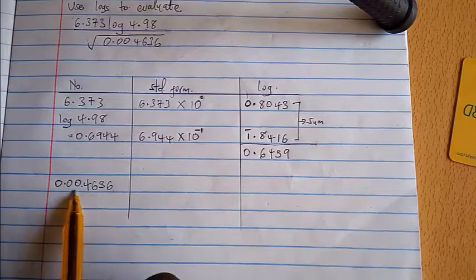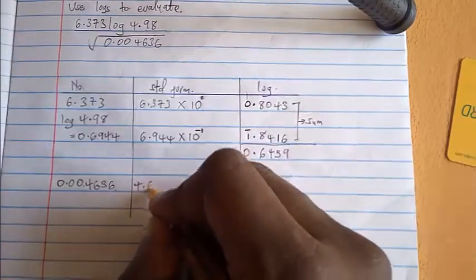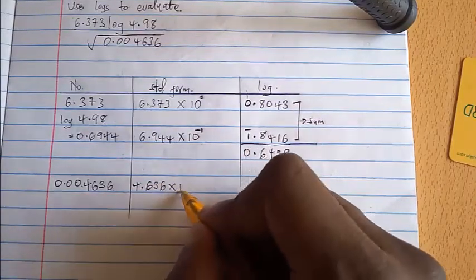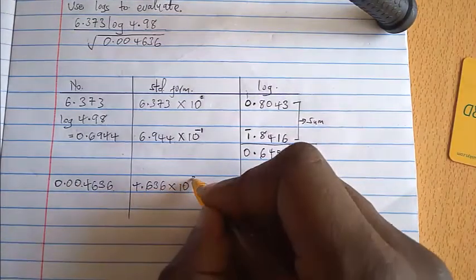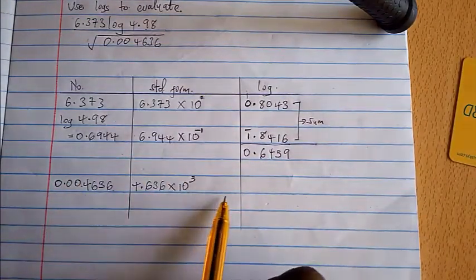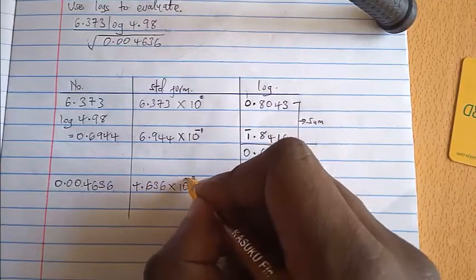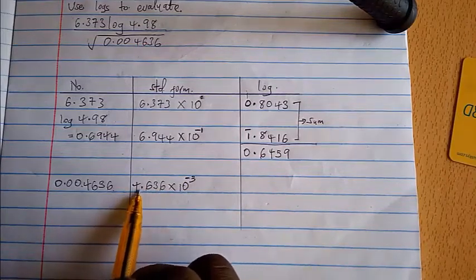Let me just slide my camera to the position where you're able to see that clearly. I have to write this in its standard form and that will be 4.636, now multiply that by 10 raised to, now the decimal point will move how many times? Three times. And since it's from the left, that will be negative three.